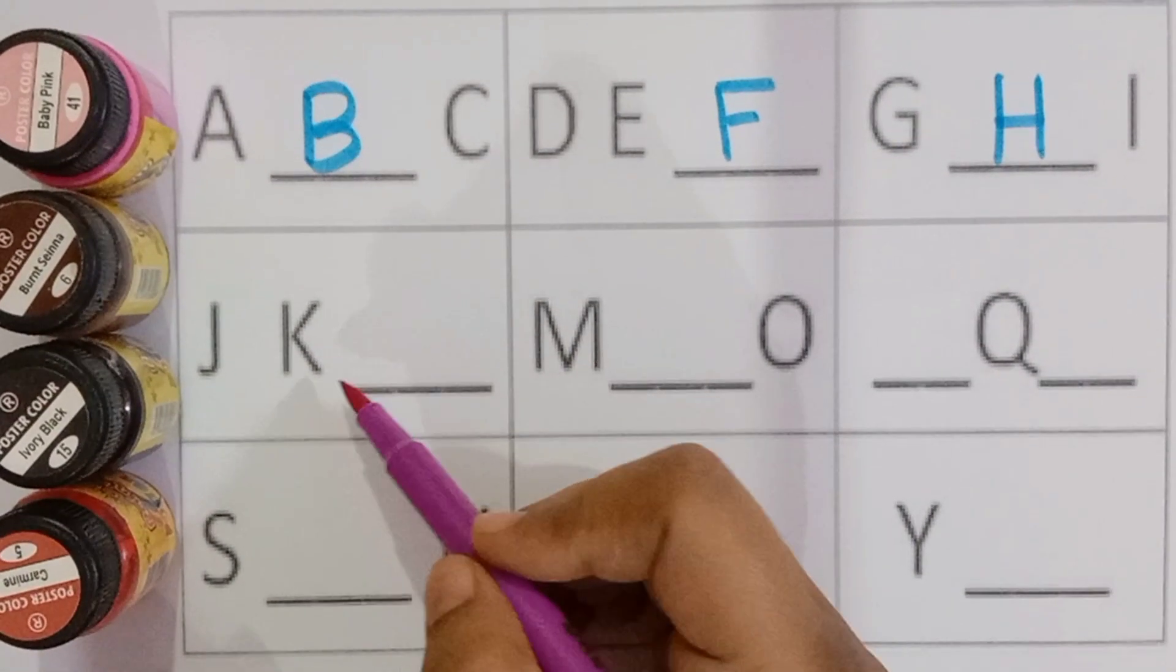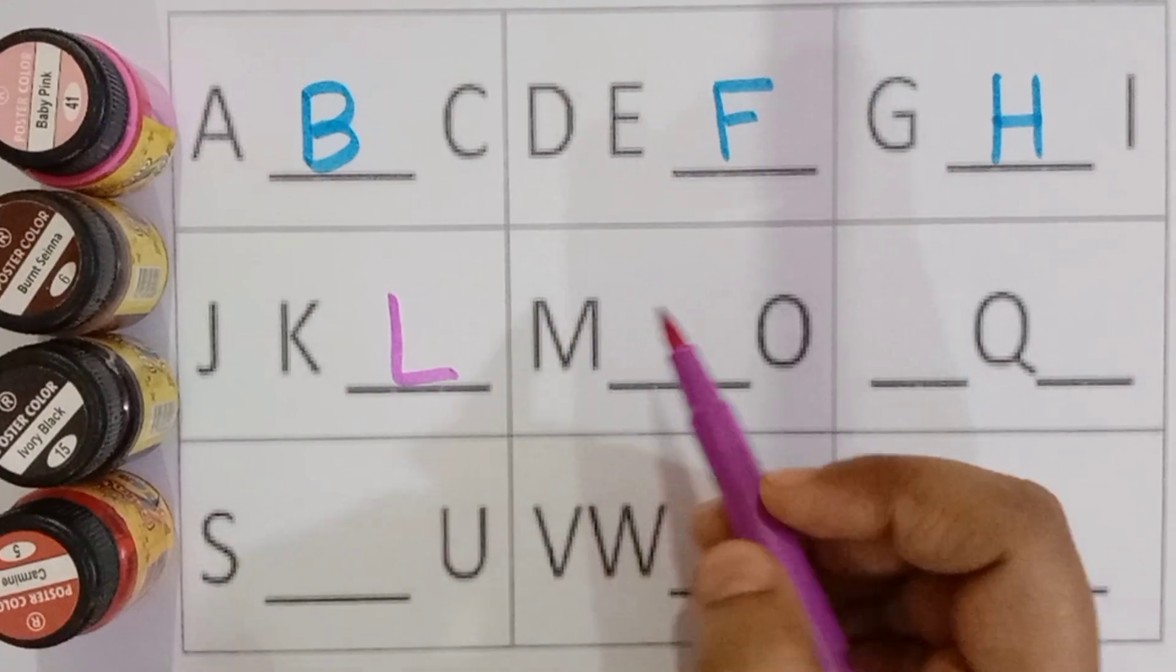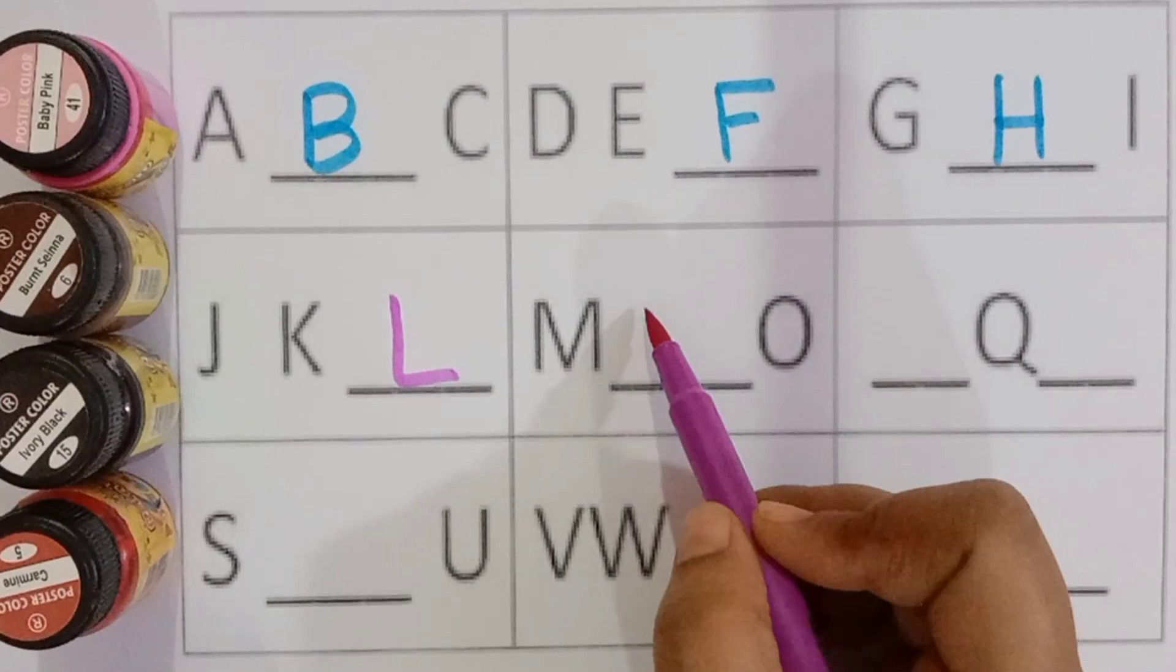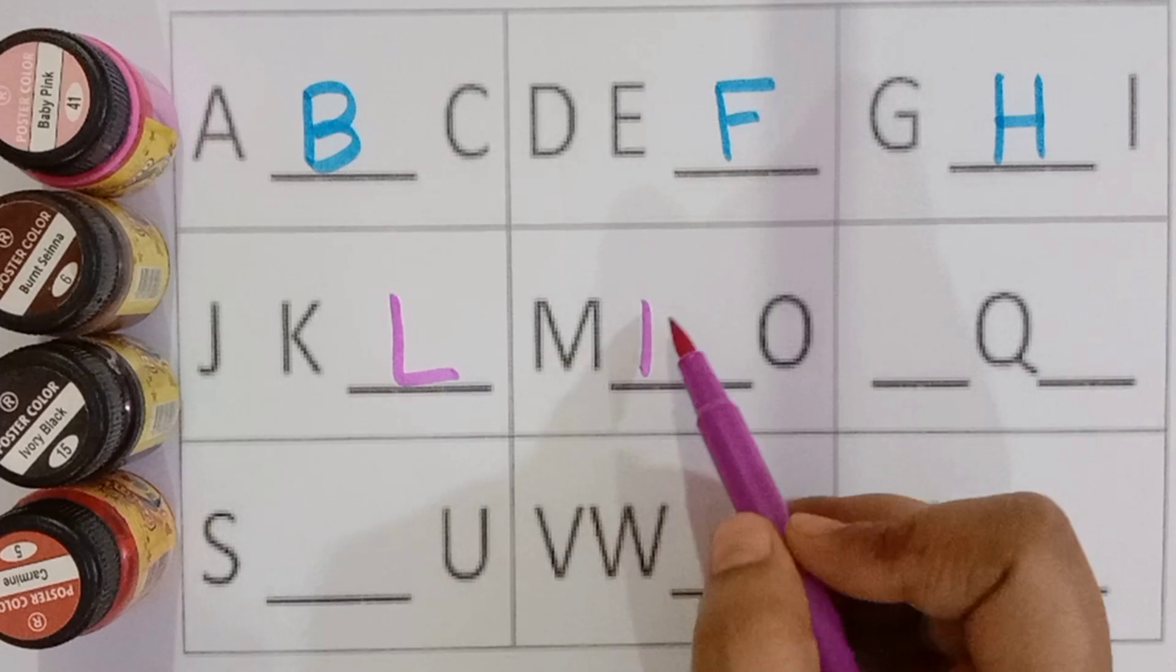J for juice, K for kite, L for lemon, M for monkey.